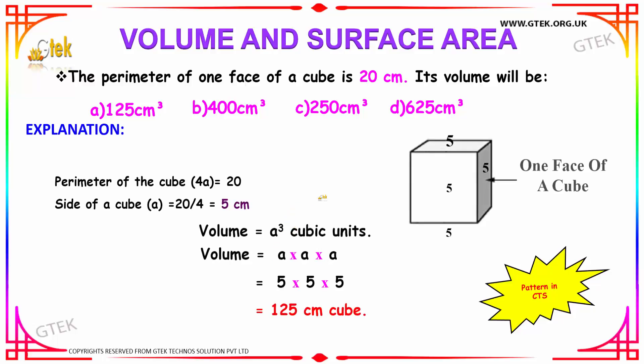We are going to find the volume of a cube whose perimeter is given as 20 cm. As you know, perimeter is nothing but 4a where a is the side of the cube. Let us see the options: 125 cm³, 400 cm³, 250 cm³, and 625 cm³.